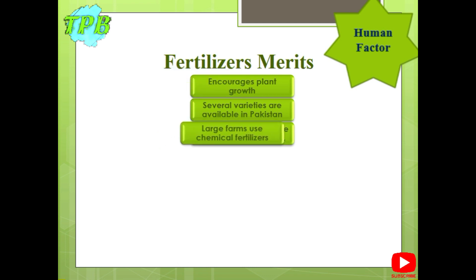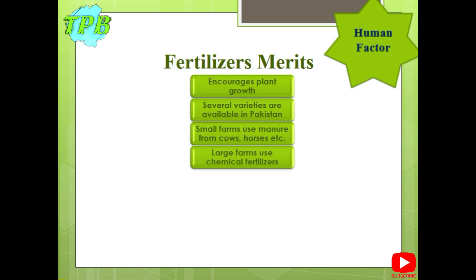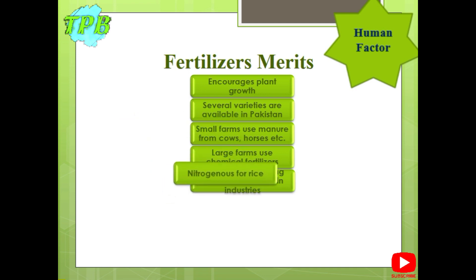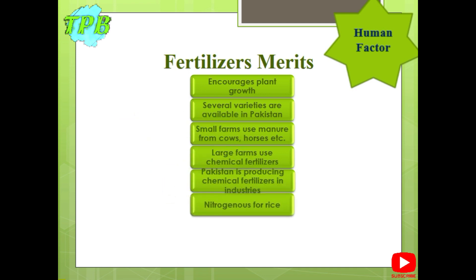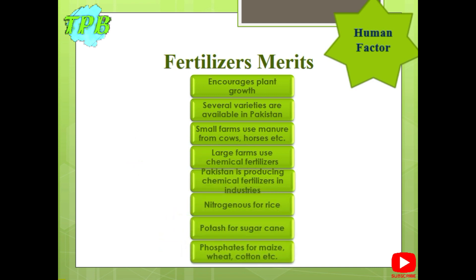Large farmers use chemical fertilizers which Pakistan produces in different industries across the country. For the growth of rice, nitrogenous fertilizers are ideal. For sugarcane, potash is ideal. For the growth of maize, wheat, cotton, and other minor crops, phosphates are best.